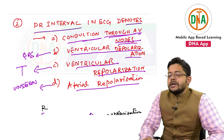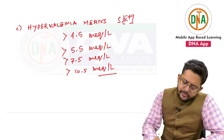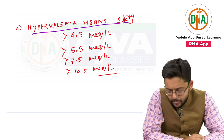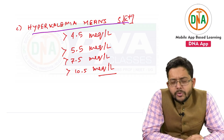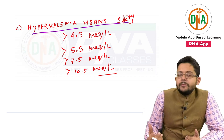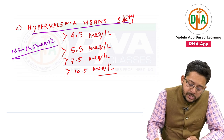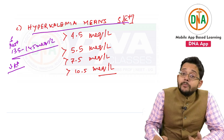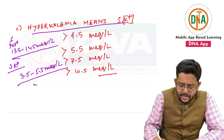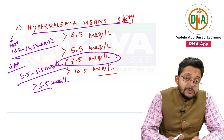The next question: hyperkalemia means serum potassium more than what — 4.5, 5.5, 7.5, or 10.5 mEq/L? Normal serum sodium is 135–145 mEq/L. Normal serum potassium is 3.5–5.5 mEq/L. Therefore, hyperkalemia is defined as serum potassium more than 5.5 mEq/L. More than 7.5 mEq/L is severe hyperkalemia requiring serious intervention, and more than 10.5 mEq/L is life-threatening.